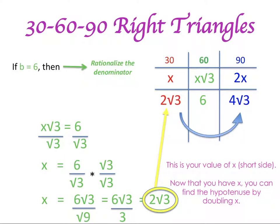I take that value and put it into my X column, my 30-degree column. Once I have that, I know in order to find my hypotenuse I just need to double it: 2 times the square root of 3, doubled — that's 2 times 2 times the square root of 3. I'll be multiplying the two 2's together to give me 4, so it'll be 4 times the square root of 3. And we found our side measurements when our long side of my triangle is 6 — I know what my short side is and I know what my hypotenuse is.